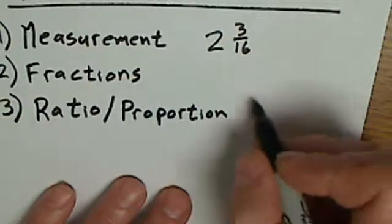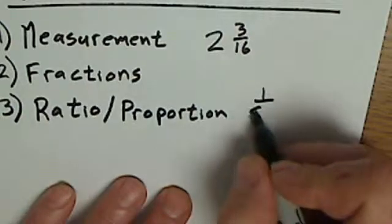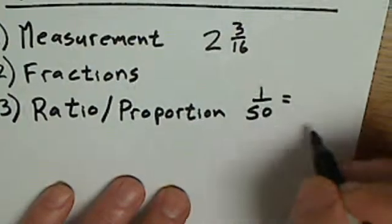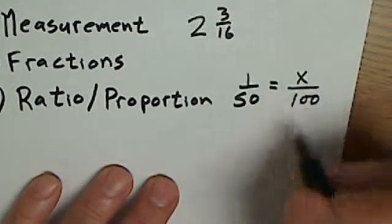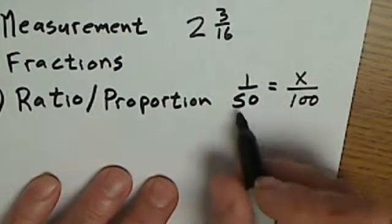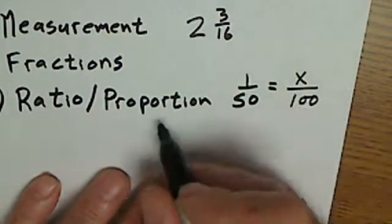If you set one ratio, 1 to 50, to another ratio, that is a proportion. So if I have a hundred parts gas, how many parts of oil do I need? One ratio equal to another is a proportion.